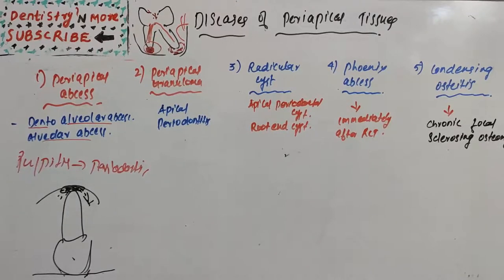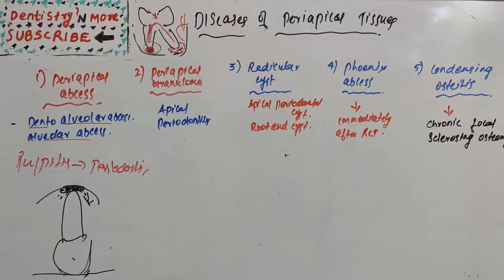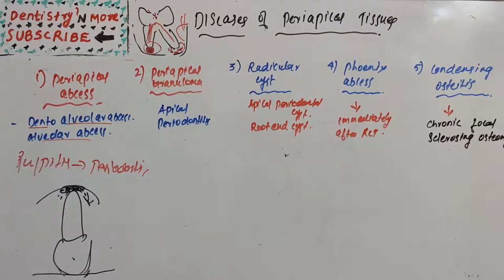Chronic abscess generally presents with no clinical features — chronic lesions will not create many symptoms. There will be a mild circumscribed area of suppuration that shows little tendency to spread from the local area. In radiographic features, except for slight thickening of the periodontal membrane, there will not be any radiographic evidence of its presence.